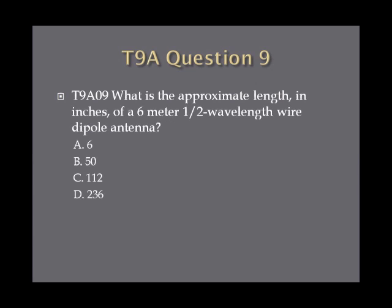Question 9: What is the approximate length in inches of a 6-meter, one-half wavelength wire dipole antenna? A. 6. B. 50. C. 112. Or D. 236.